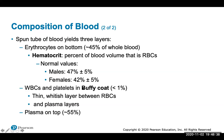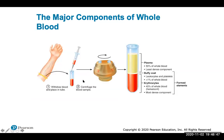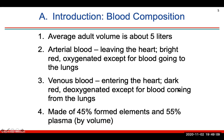White blood cells and platelets are in the buffy coat, which makes up less than one percent of a blood sample, and plasma is always on top. Taking a blood sample from a patient, spinning it down in the centrifuge, separates these layers: plasma on top, the thin buffy coat with leukocytes and platelets, and erythrocytes at the bottom taking up about 45%. Your average adult has about five liters of blood, made up of 45% formed elements and 55% plasma by volume.